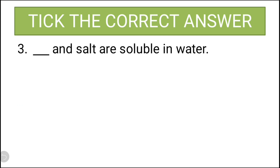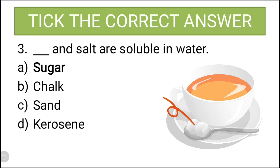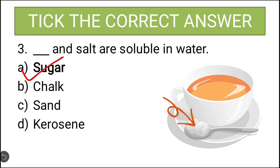The third question: dash and salt are soluble in water. The options are sugar, chalk, sand, and kerosene. Chalk, sand, and kerosene never get dissolved in water. So what remains is sugar. Sugar is the correct answer.